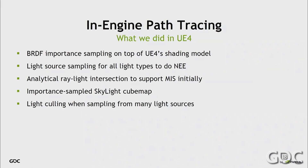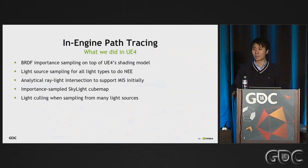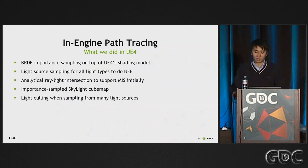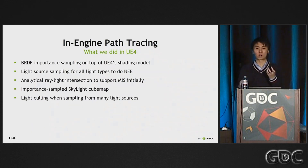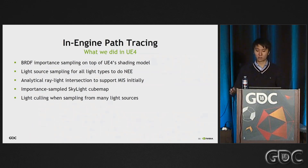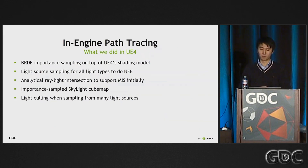We also added importance sampling on UE4's shading model, which is quite similar to Disney's principled BRDF — so it's pretty standard. We added importance sampling of existing UE4 light types: spherical lights, directional lights, and rectangular lights. For direct lighting multiple importance sampling, we had to add analytical ray-light intersection so that rays can intersect with spherical lights analytically, and then calculate MIS accordingly. Finally, we also added light culling to make sampling from multiple light sources more efficient.